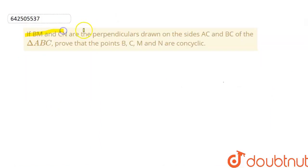If BM and CN are the perpendiculars drawn on the sides AC and BC of a triangle ABC, prove that the points B, C, M and N are concyclic.